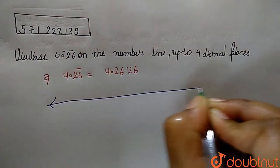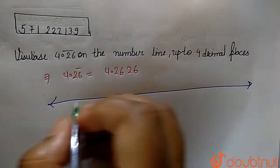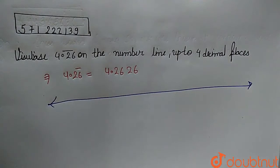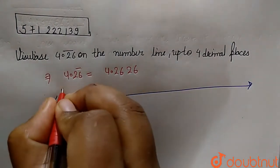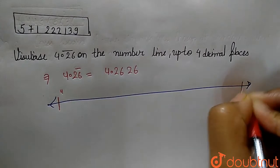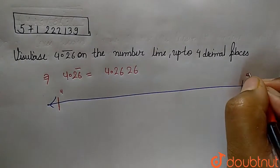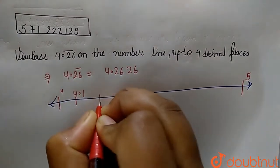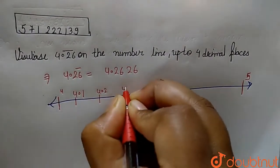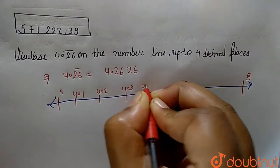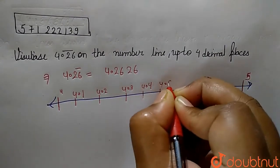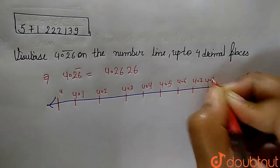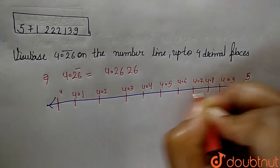Let's draw a number line from 4 to 5. This is our number line — here is 4 and the last point is 5. In between 4 and 5 we will have the points 4.1, 4.2, 4.3, 4.4, 4.5, 4.6, 4.7, 4.8, and 4.9.